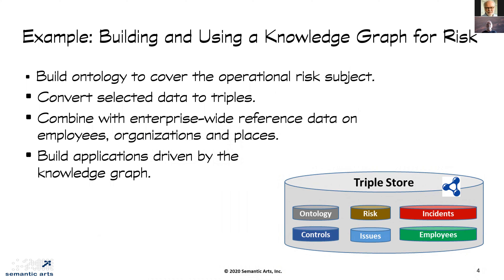I'm going to jump right into an example and then back out to talk about different experiences and lessons learned. What we do for a typical company is exemplified by this example. We gave a talk at the Data Architecture Summit last October. The company we worked with is Morgan Stanley. They have a lot of operational risk — any financial institution has a lot of risk about things going wrong. We built an ontology to cover subject matter related to risk: what kind of issues arise, what the risks are, their taxonomy of risks, actual incidents that happen, controls to make bad events less likely, and generic stuff like employees.